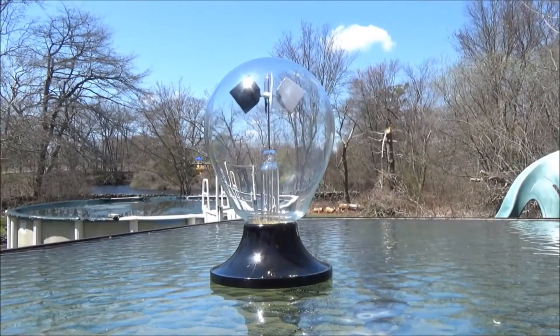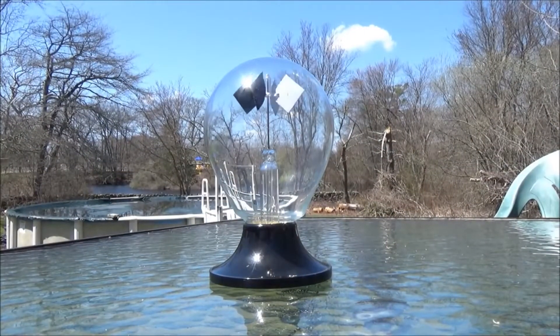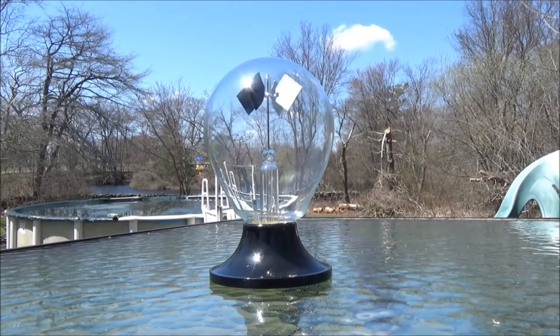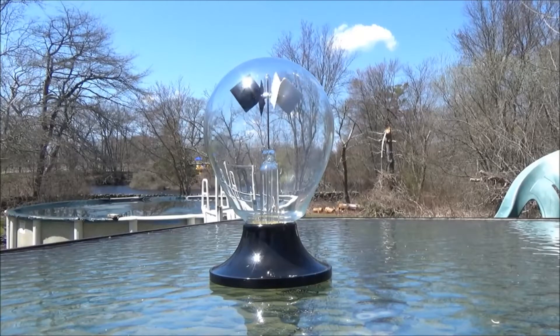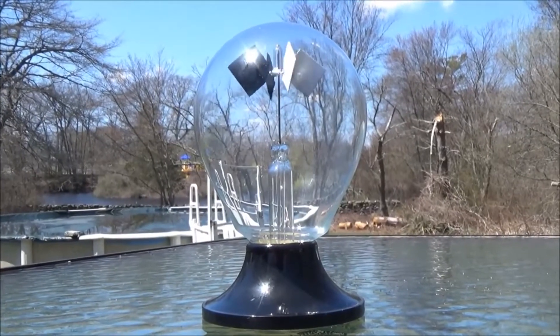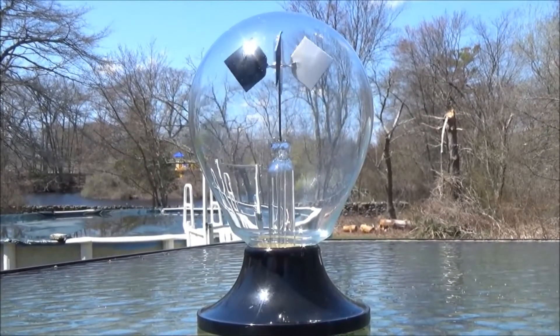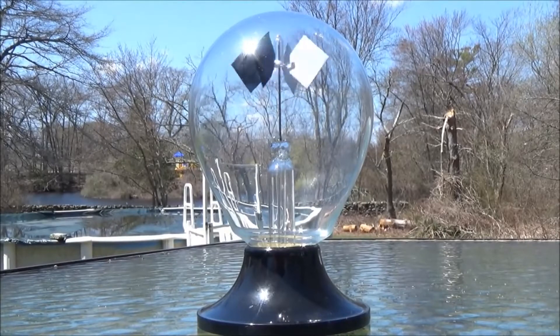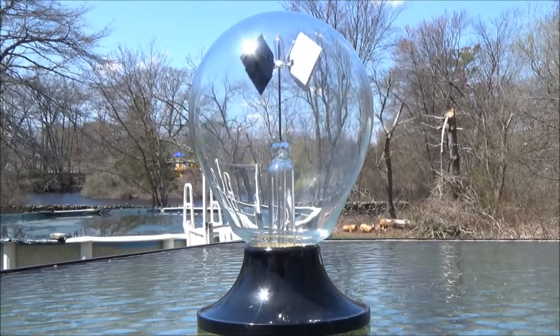On one side of the vein is black and on the other side is white. And that's because the black side will absorb the light and the white side will reflect it. So because of this, when light hits the black side, it causes a temperature difference between the black side and the white side of each little vein.